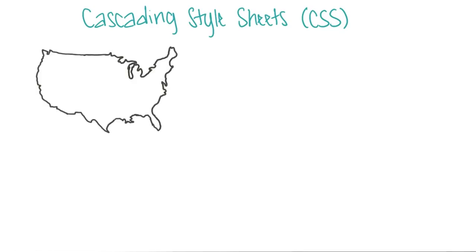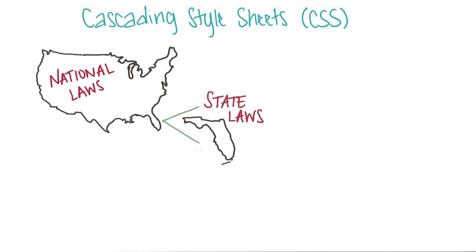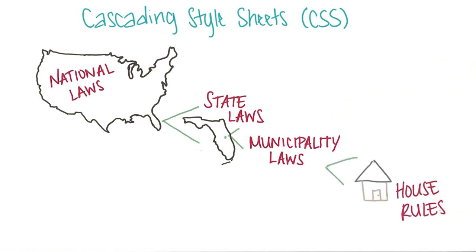Think of it in terms of laws. You have a national law that deals with how your country is organized, then you might have state laws which tell you what you can or cannot do in a given state, then municipality laws which specify what you can or cannot do in your city, and then your own house rules. With CSS, the most specific rule is applied to every element.